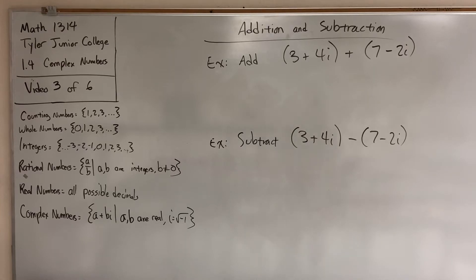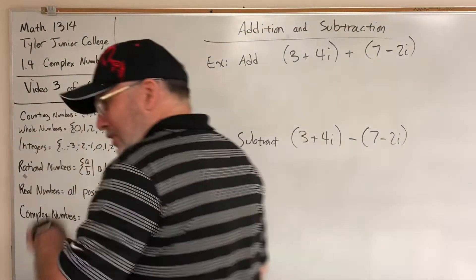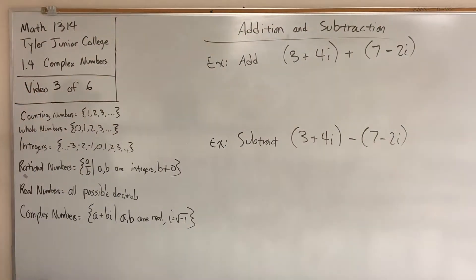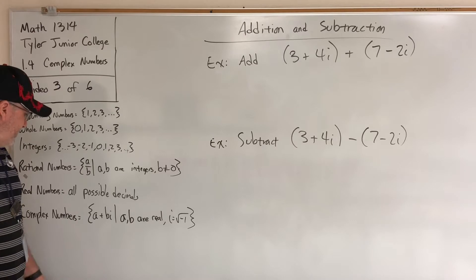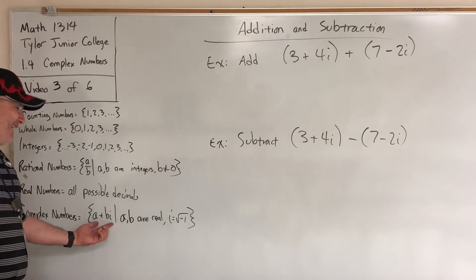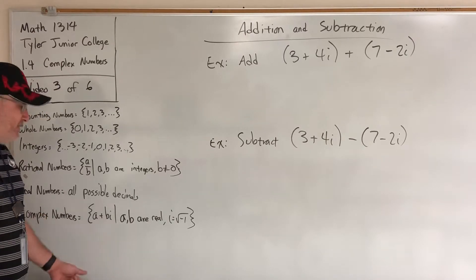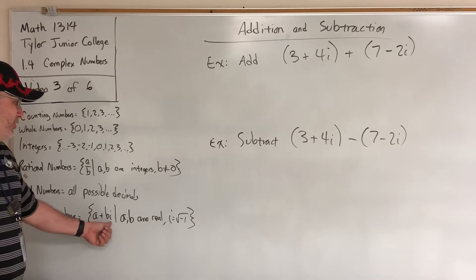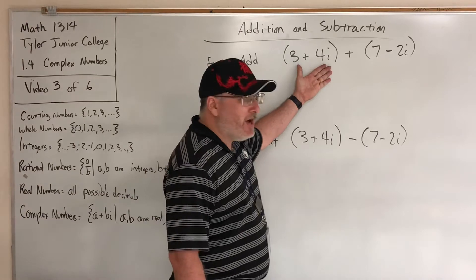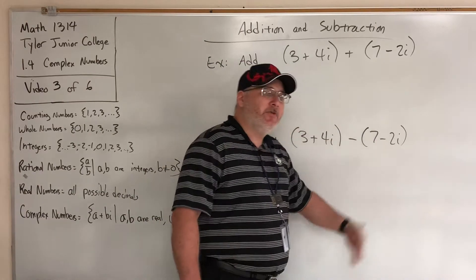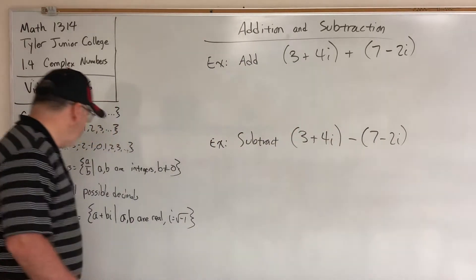Math 1314, Tyler Junior College, section 1.4 complex numbers, video 3 of 6. In the previous video we defined imaginary numbers, and then along with the real numbers we created complex numbers. A complex number is like a failed attempt to combine a real number and an imaginary number because they're not like terms — such as 3 plus 4i or 7 minus 2i.